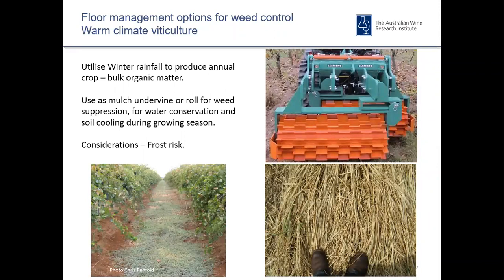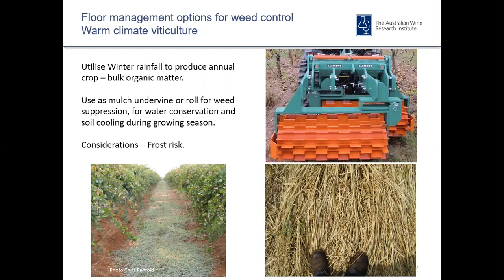For floor management options for weed control in a warm horticultural climate where water availability during the growing season is more of an issue: if there is winter rainfall that can promote an annual crop, it is recommended to build up as much bulk organic matter as possible in winter, then utilise that mulch for either undervine or rolling in the mid-row. Get the benefits of improved water conservation during the growing season as well as weed suppression, and the potentially cooling effect of covering the soil during the growing season, particularly close to harvest. It is important to consider that if you are in a frost risk area, you need to consider whether the benefits outweigh the risks of damage to the crop through having mid-row coverage.